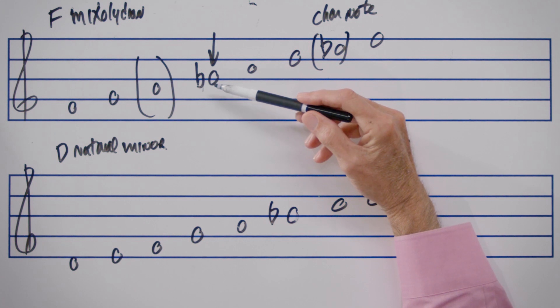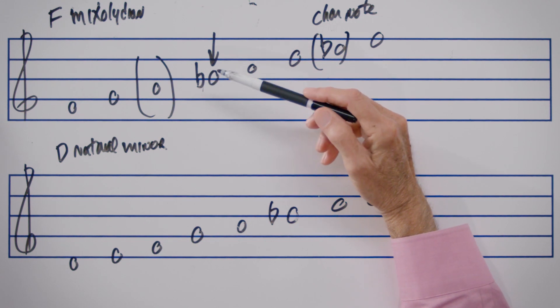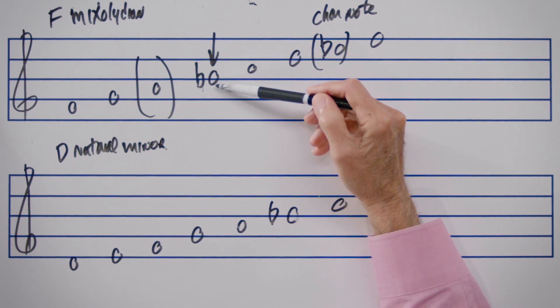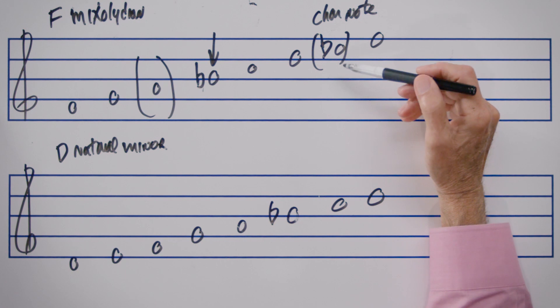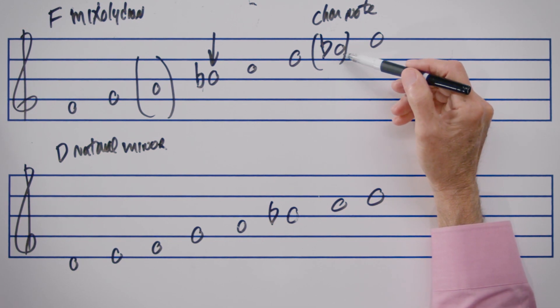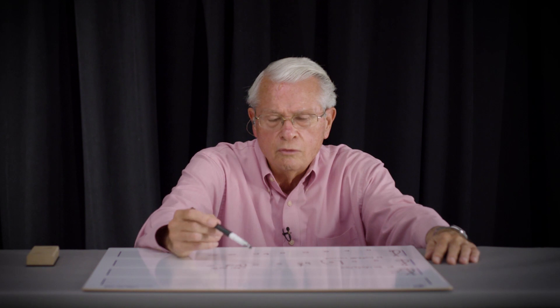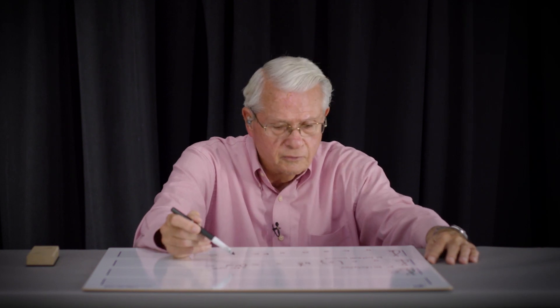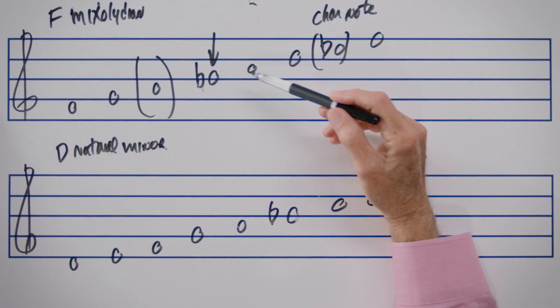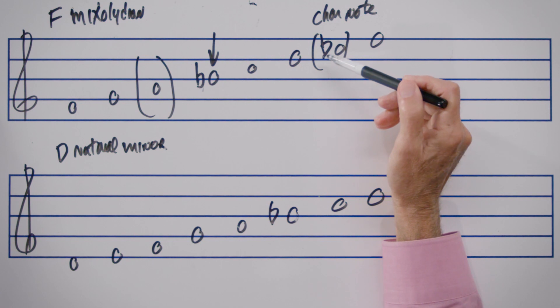We call the E flat the characteristic note of the Mixolydian scale because it is the note that sets it apart from a regular major scale. In both the Lydian and Mixolydian cases, that one different note — the fourth scale degree in Lydian and the seventh scale degree in Mixolydian — is enough to make a very big difference in terms of the sound of the scale, the sound of melodies written using those scales, and the sound of harmonies designed from those scales.